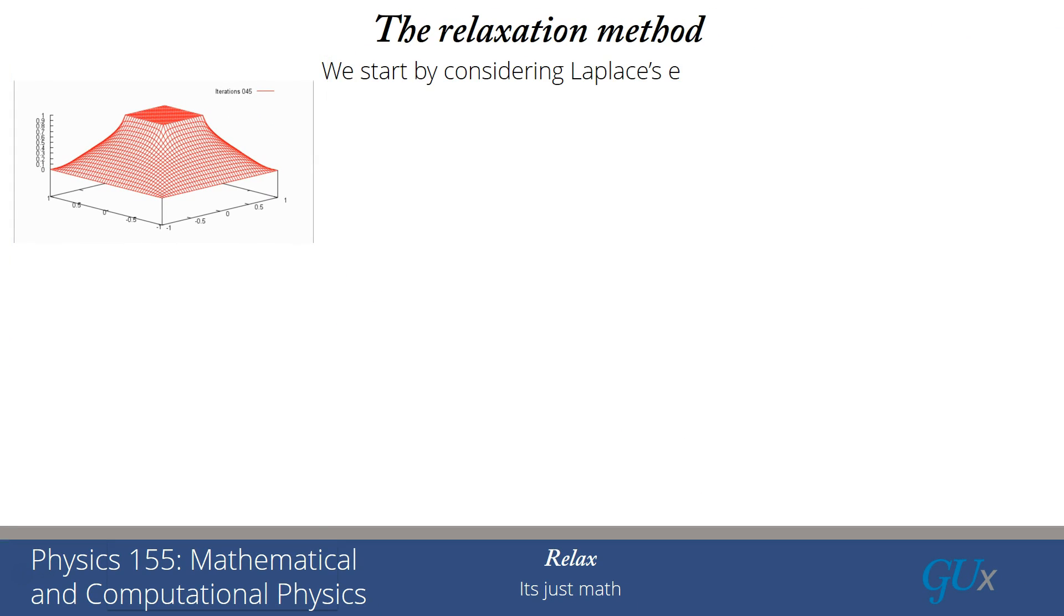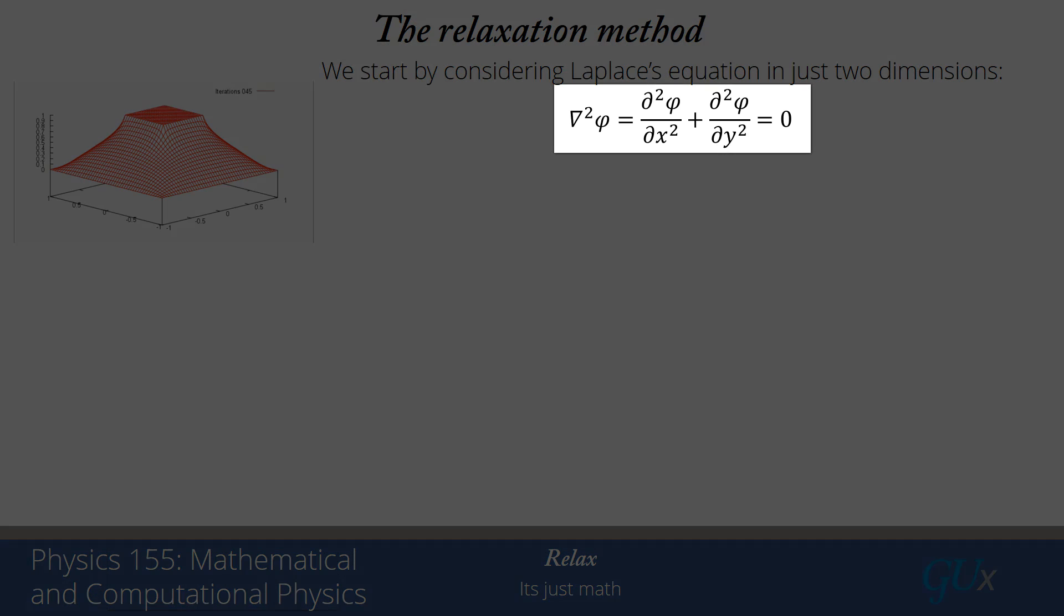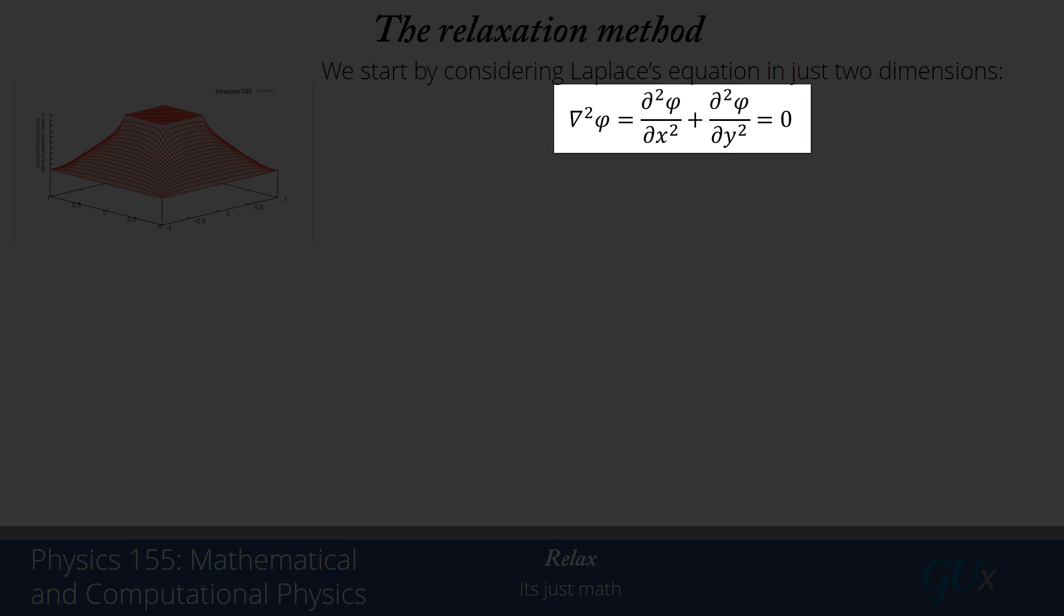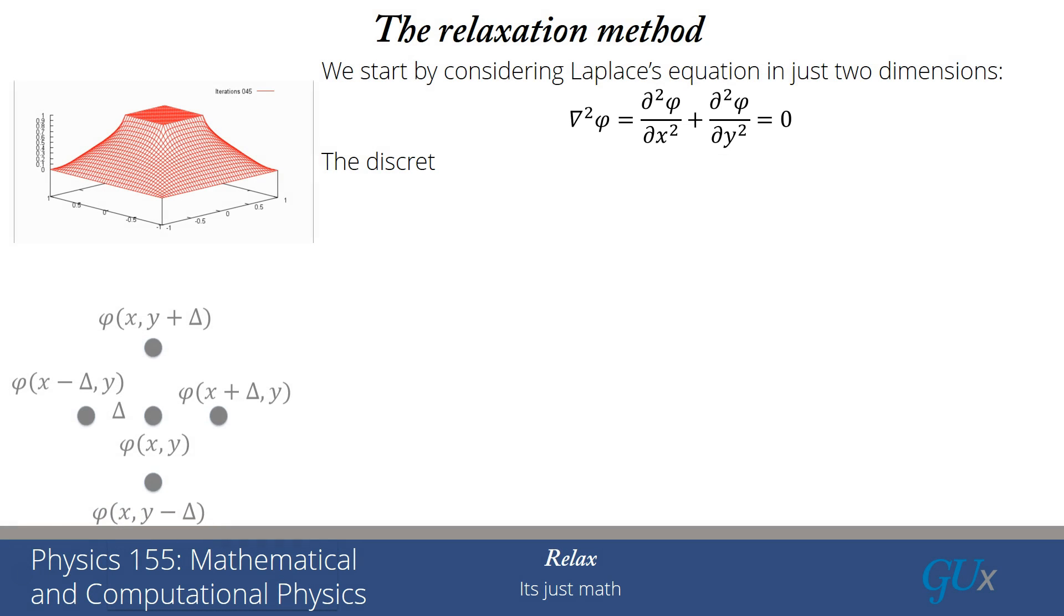So we start by considering Laplace's equation in just two dimensions. I'm going to work in Cartesian coordinates where the Laplacian acting on phi is just the second derivative of phi with respect to x plus the second derivative of phi with respect to y, and the sum of those two has to equal zero.